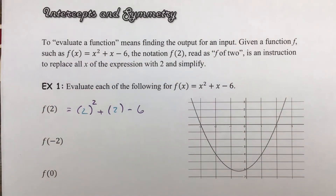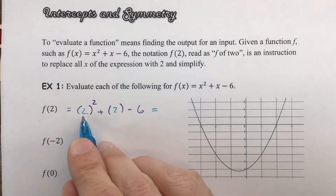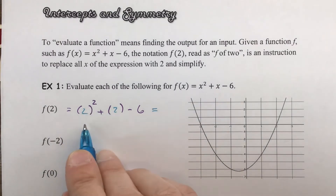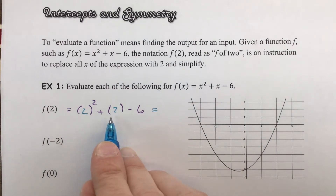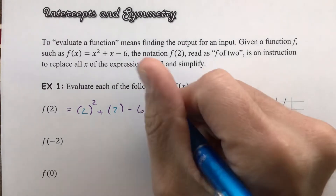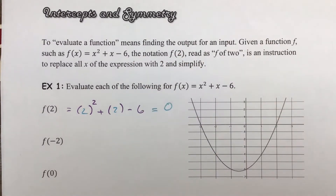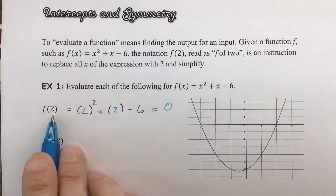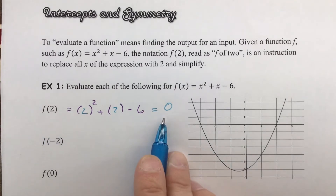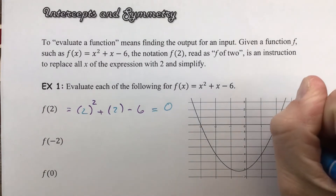In this example, you could probably do the whole problem without any parentheses, and it seems a little bit silly. But in the next one, I think it's going to justify some things. So we have 2 squared, which is going to be 4. Plus 2 is going to give you 6. 6 minus 6 is going to give you 0. You can think of this as identifying a coordinate on the graph: you have an input of 2, the output is going to be 0, located right there.